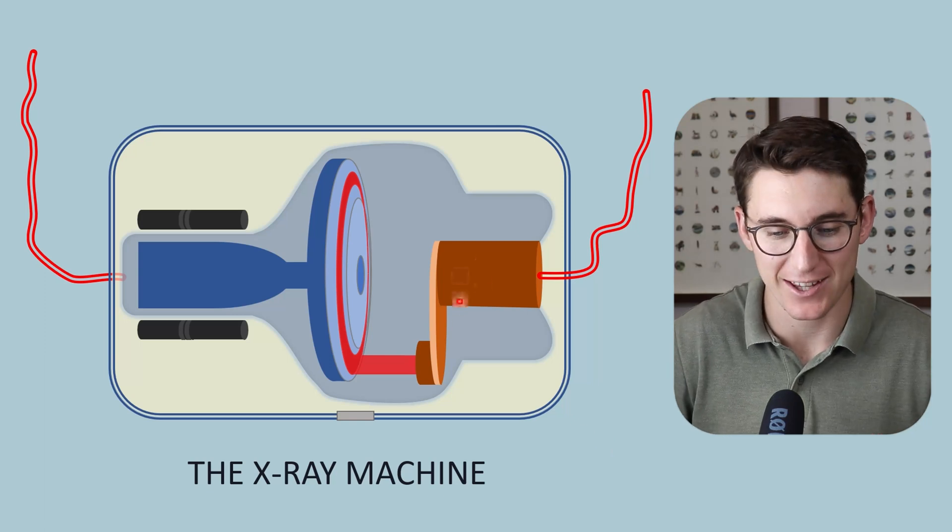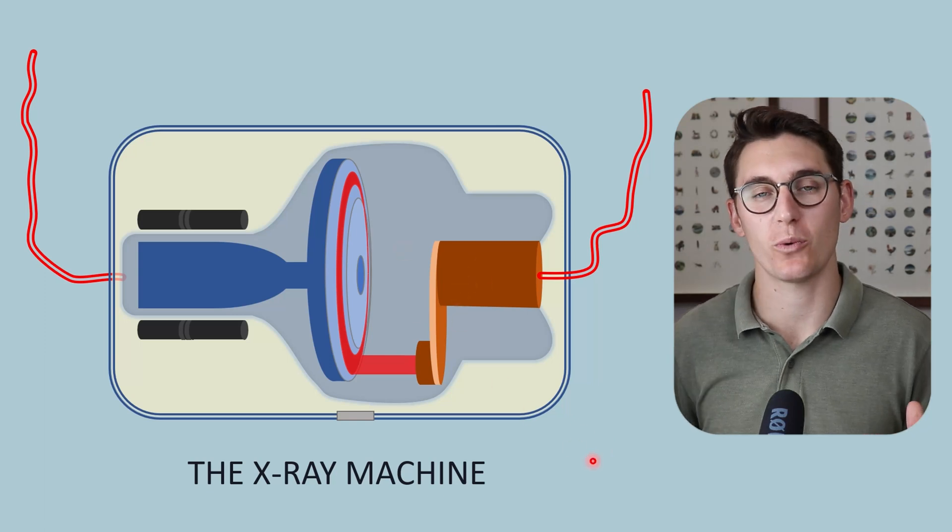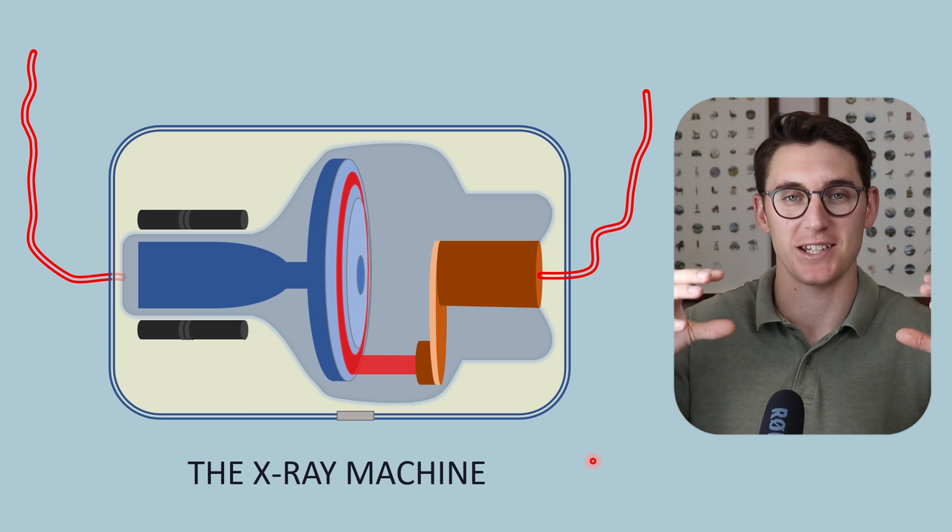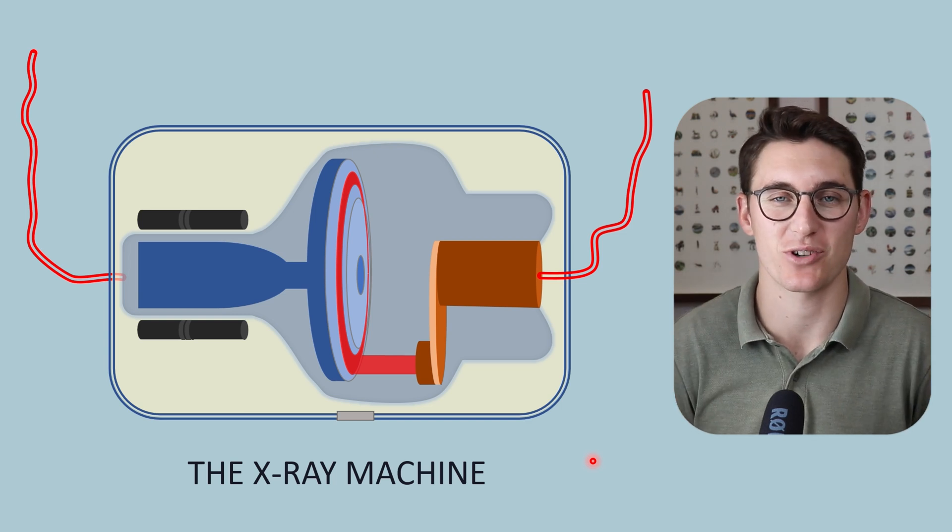We've spent some time now looking at the cathode and the anode, which are by far and away the most important structures within the x-ray tube when it comes to our x-ray physics module.